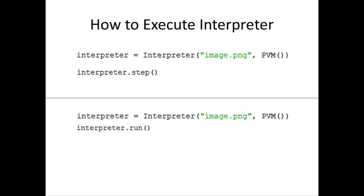Finally, there are two ways to run a given PEAT program. For both cases, a new interpreter needs to be made containing the name of the image and the PVM function, which is the PEAT virtual machine function, to reset the direct pointer and CODAL chooser to their default locations. Then we can call interpreter.step to go through the program one step at a time. We can also call interpreter.run to step through the entire program at once.